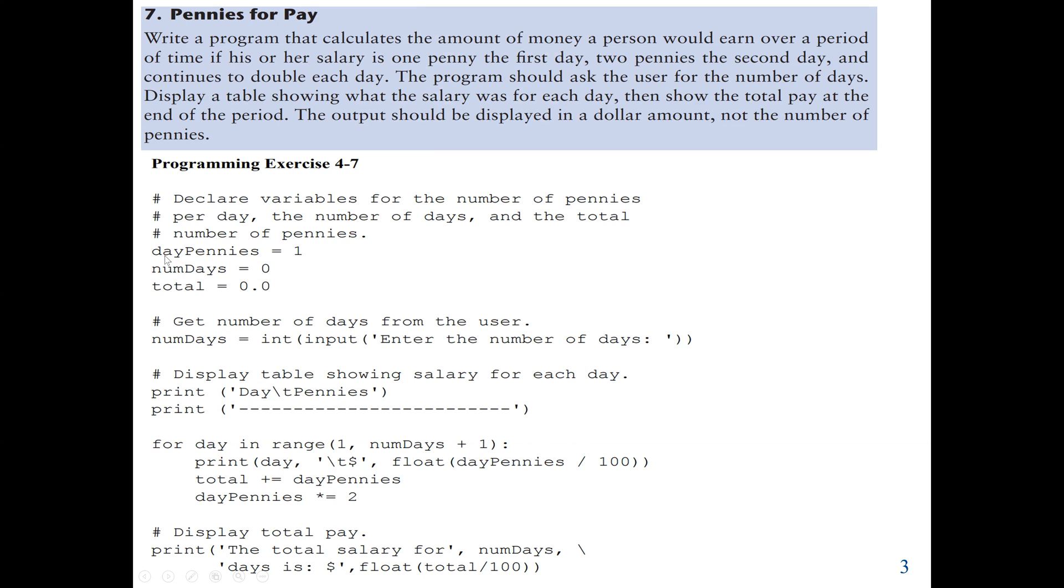The first variable is day pennies, which stores the number of pennies per day. Then we have num days, the number of days the person works. And then total pennies, the total number of pennies for the period. For example, if it's 10 days, the total pennies earned for those 10 days. We can divide by 100 to convert to dollars.